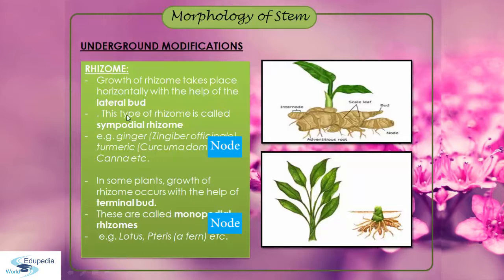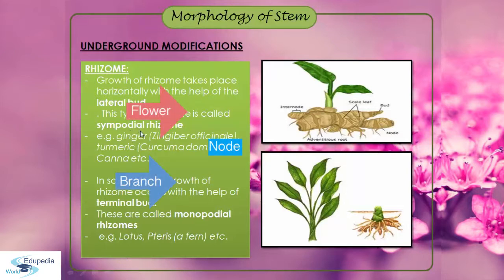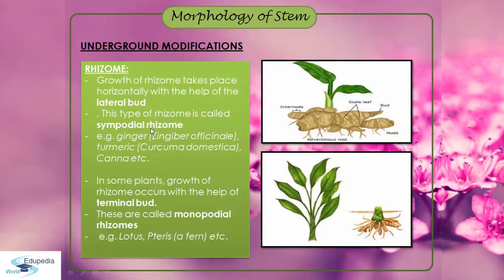The rhizome grows in the horizontal direction with the help of lateral bud. This type of rhizome is called sympodial rhizome. Examples are ginger (Zingiber officinale), turmeric (Curcuma domestica) and canna — in all three, sympodial rhizome is seen where growth takes place horizontally with the help of the lateral bud.